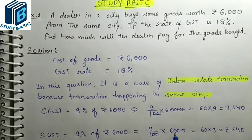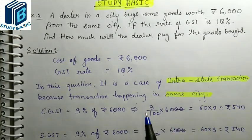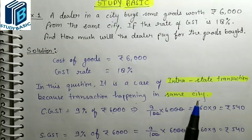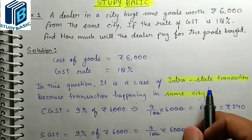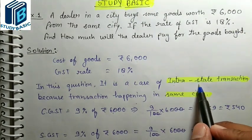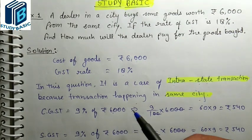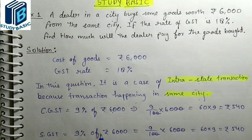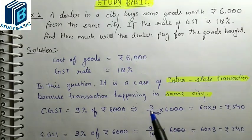This is an intra-state transaction because it is in the same city. Even if two different cities are involved — say Lucknow and Agra — as long as they are in the same state, it is still an intra-state transaction. It is intra-state, not intra-city. The state — like Maharashtra or UP — is what matters. If the transaction is within the same state, it is an intra-state transaction.